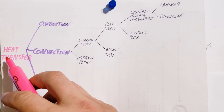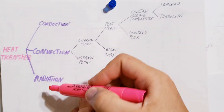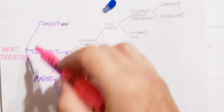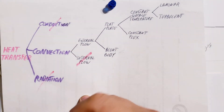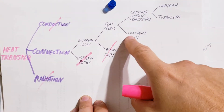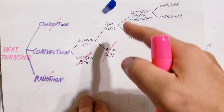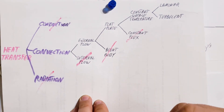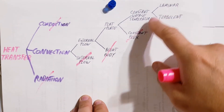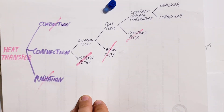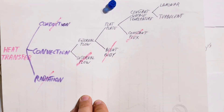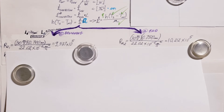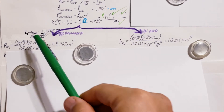We confirm this is a heat transfer problem with convection — no radiation, no conduction for this part. It's external flow, not internal. We have a flat plate with constant surface temperature at 150 degrees Celsius, not constant flux. We still need to determine whether conditions are laminar or turbulent by calculating the Reynolds number, which will tell us which correlation to use.